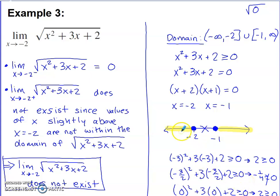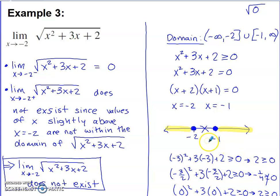Testing each section: picking negative 3 for the left section gives 2 ≥ 0, which is true — that entire stretch satisfies the inequality. Picking negative 3/2 (between negative 2 and negative 1) gives negative 1/4 ≥ 0, which is false — that portion is not in the domain. Picking 0 from the right section gives 2 ≥ 0, which is true. So the domain includes everything from negative infinity to negative 2 (including negative 2) and from negative 1 to infinity.